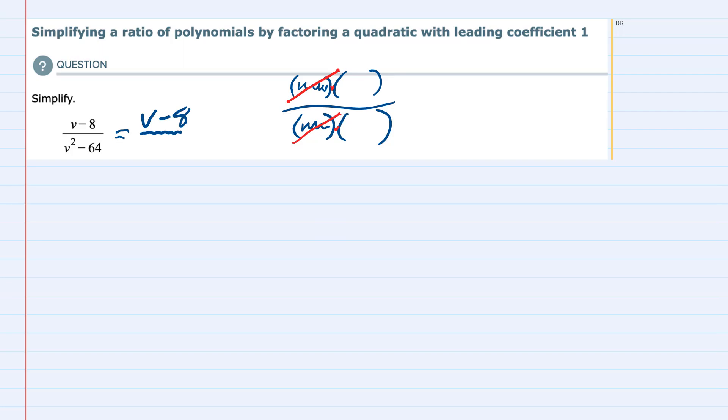However the denominator v squared minus 64, v squared and 64 are both perfect squares. So to represent that I'm going to rewrite this as v quantity squared minus 64 is a perfect square, it is 8 squared.